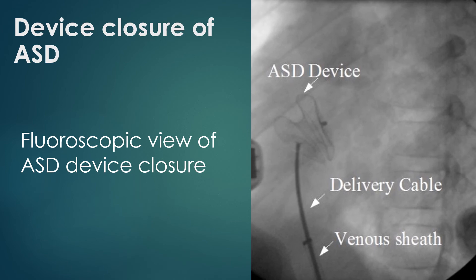Device closure of ASD is suitable for secundum atrial septal defect with a good rim all around for holding the discs together. Transesophageal echo is done to assess the superior aortic and mitral rims as well as the total septal length, and TEE guidance during the procedure is ideal.